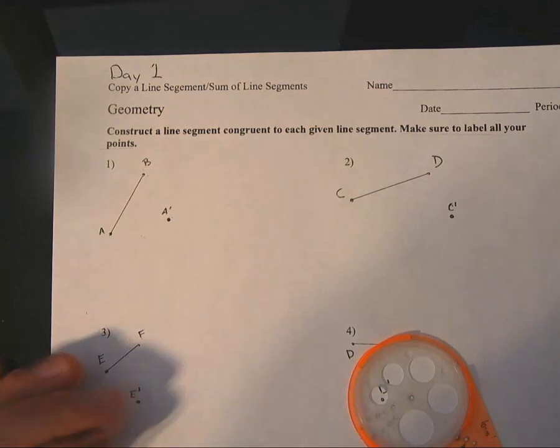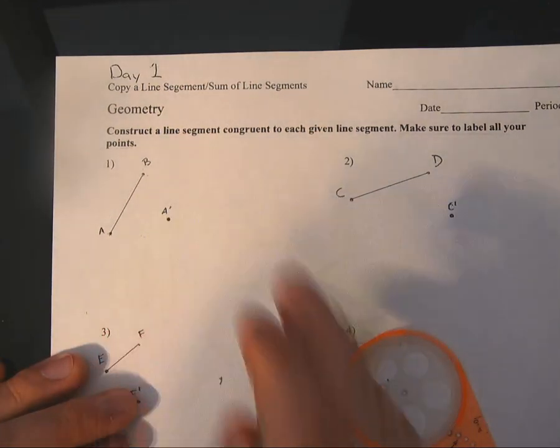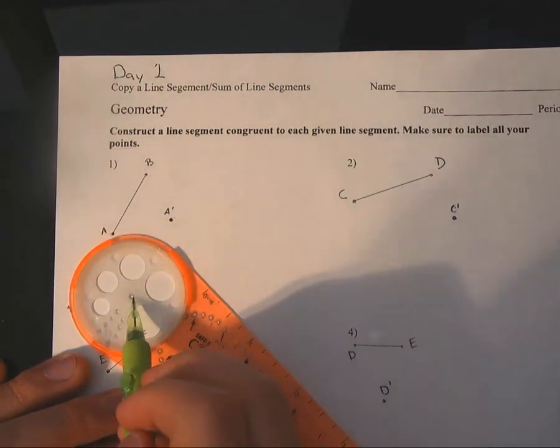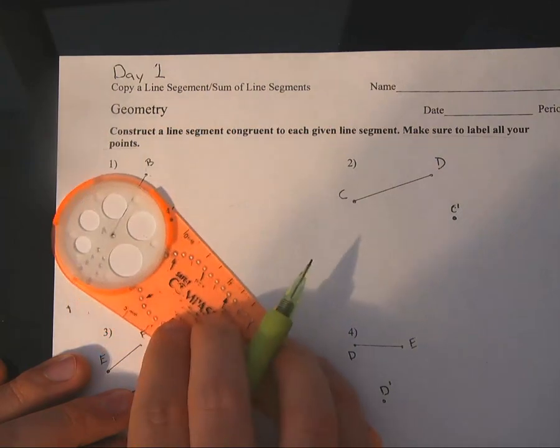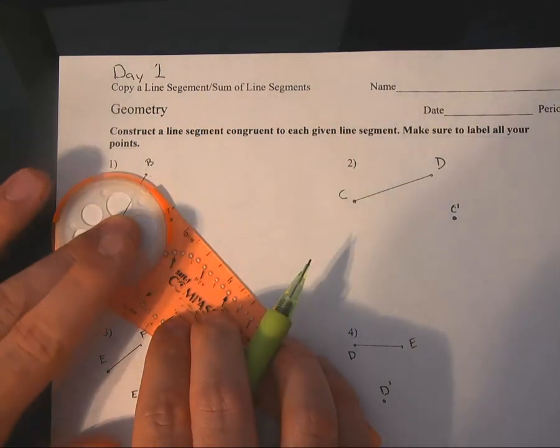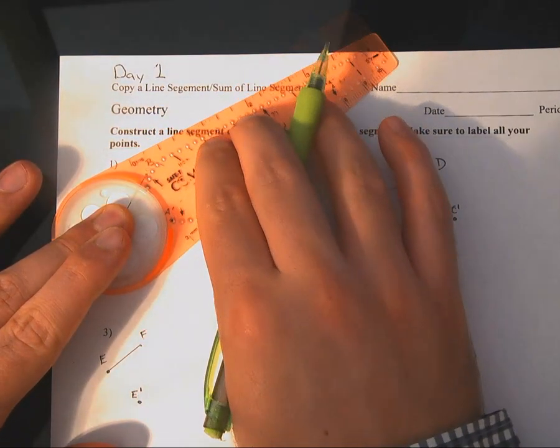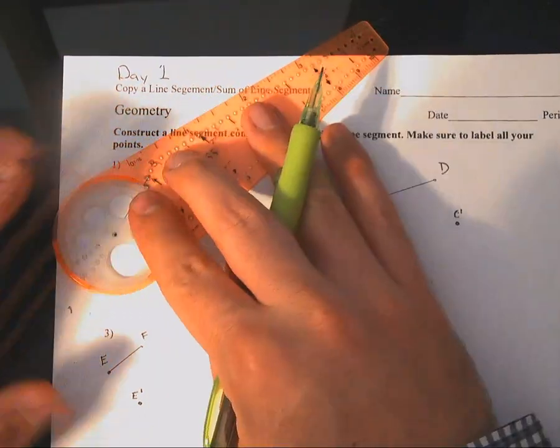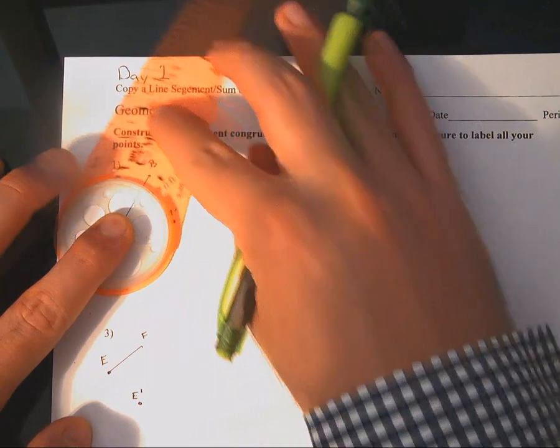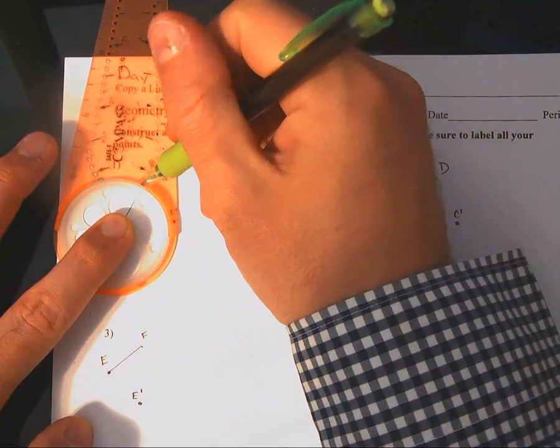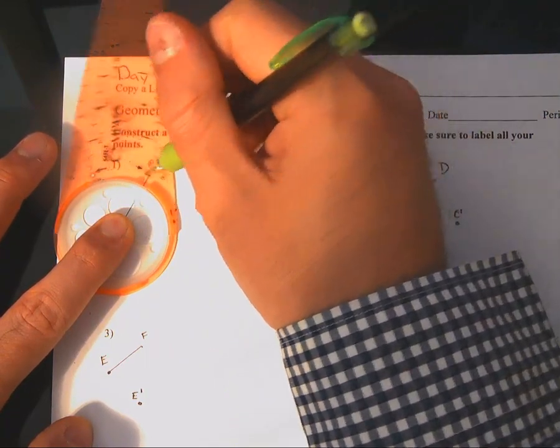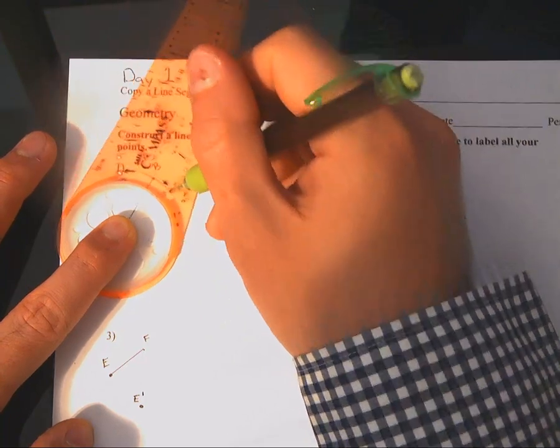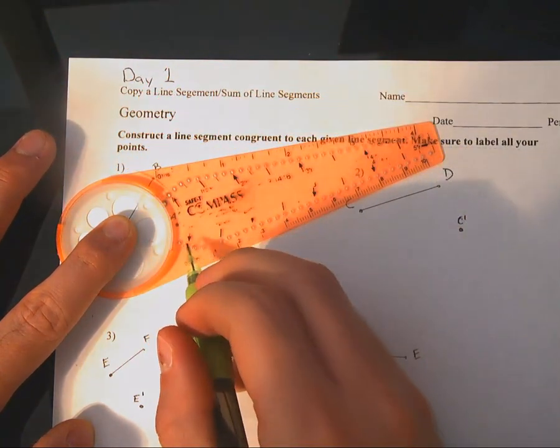So I'm going to take the center of my compass and place it on A, and then find the circle that works to go out to B. Again, pick your closest point. Make sure your center is good. Pick your closest point. Looks like my second dot on this side is going to work out great. So instead of removing my pencil from this point, I'm going to keep it in there so I don't have to count or remember where my pencil needs to go.